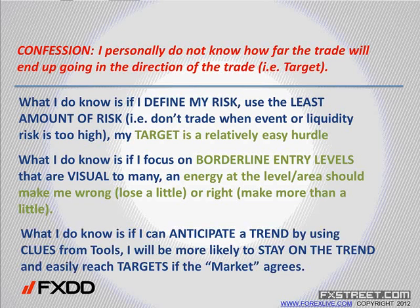I like to focus on borderline levels, define and limit my risk. And if I can anticipate a trend by using clues from tools like moving averages, Fibonacci retracements, and trend lines — and I can understand the market is in a non-trending mode like it was in April and March — then eventually the market is going to trend like it has in May. If I see these non-trending months, I can be better prepared to anticipate a trend. And if you anticipate something may happen and it actually starts to happen, that changes your whole perception of how you're going to trade that trend.